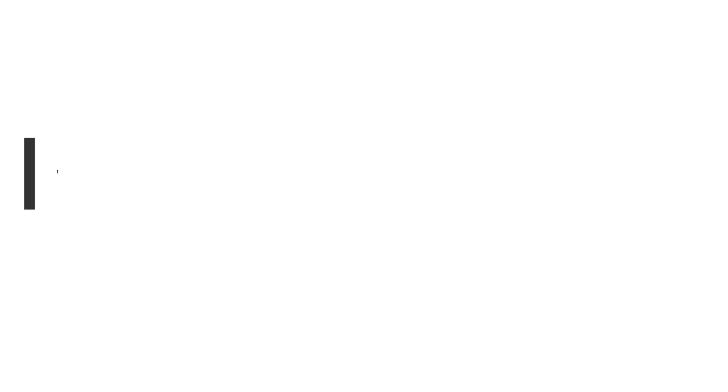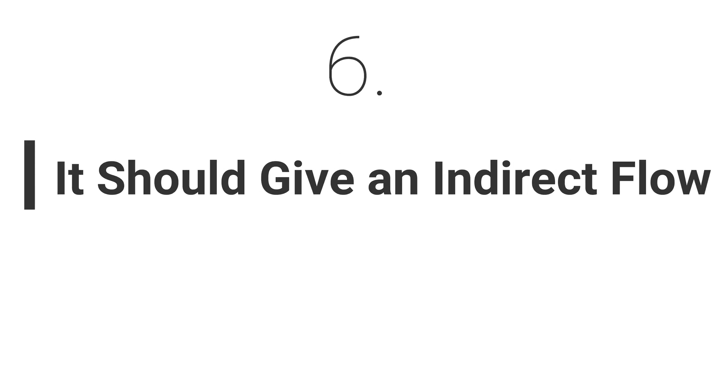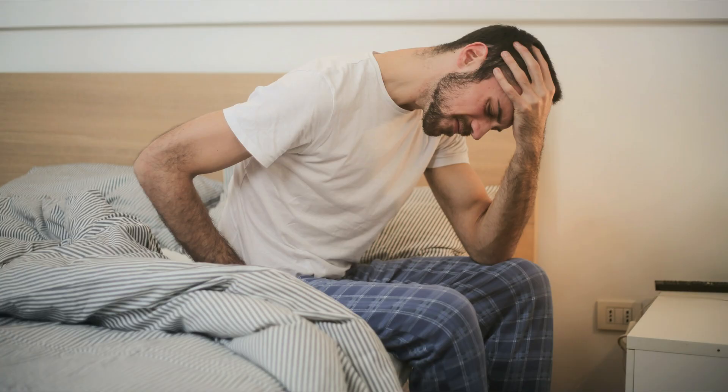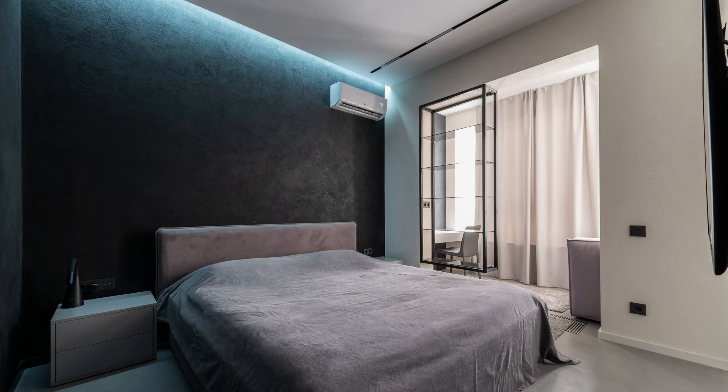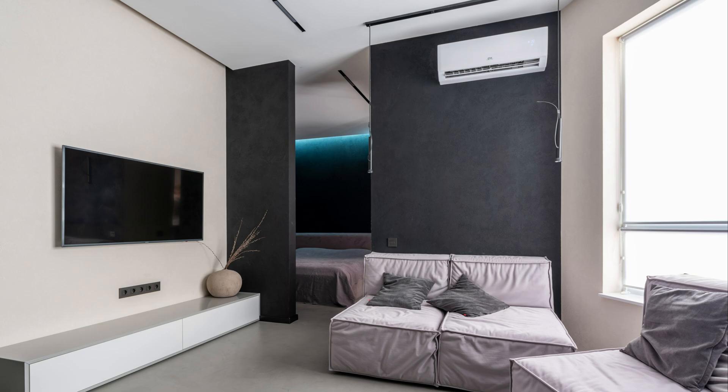Tip number six: install the AC unit such that it gives an indirect airflow. Installing AC such that it gives a direct flow might create discomfort to the users and there may even be chances of undesirable health effects like dry skin, joint pain, sore throat, etc. So it is better to align the indoor unit in such a way that it gives a cooling effect by indirectly cooling the entire area of the room.